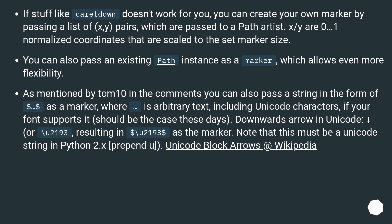Downwards arrow in Unicode is backslash u2193, resulting in dollar sign, dollar sign as the marker. Note that this must be a Unicode string in Python 2.x, prepend u. Unicode block arrows at Wikipedia.